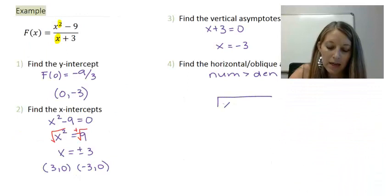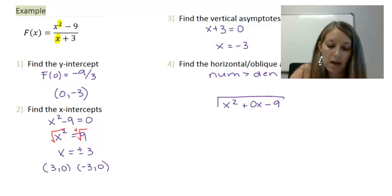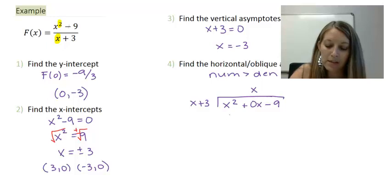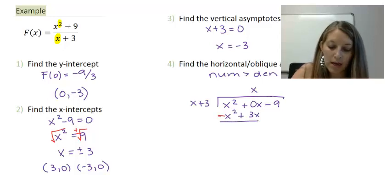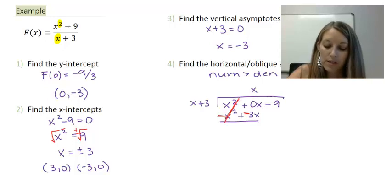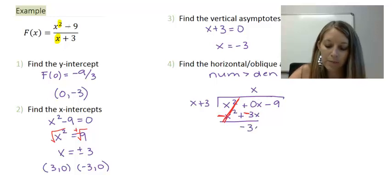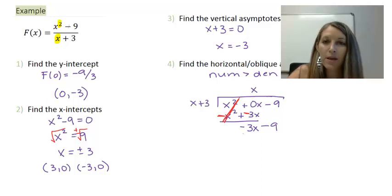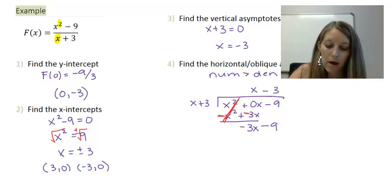Setting up the long division: I put in x² with a placeholder 0x term to help line things up, then minus 9, divided by the denominator x + 3. First, x times what gives me x²? That's x. Multiplying all of (x + 3) by x gives x² + 3x. Subtracting — distributing the negative — the x² terms cancel, leaving -3x. Bringing down the -9 and repeating: x times what gives -3x? That's -3.